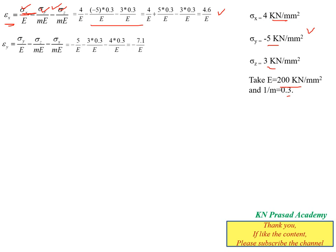The strain in the y direction, εy = σy/E − (1/m)·σz/E − (1/m)·σx/E. Substituting σy = −5, σz = 3, and σx = 4, with 1/m = 0.3: we get −5/E − (3 × 0.3)/E − (4 × 0.3)/E, which gives εy = −7.1/E.